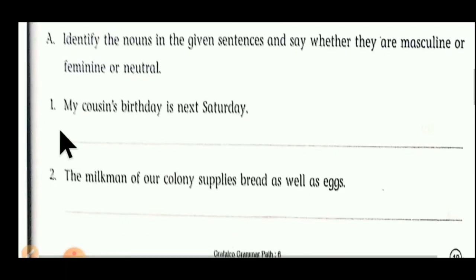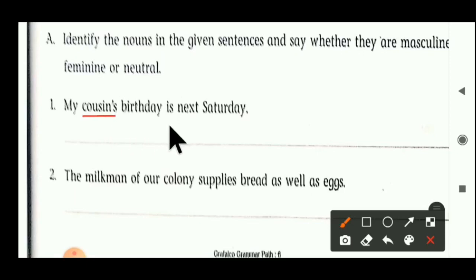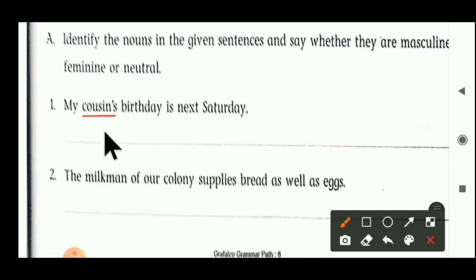First sentence: 'My cousin's birthday is next Saturday.' Which is a noun here? Cousin is a noun here — it is a common gender. Cousin may be male or female, it is a living thing. So cousin becomes common gender. You have to write the answer: cousin — common gender.